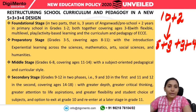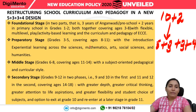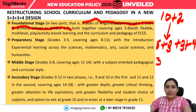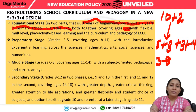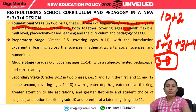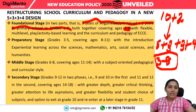The foundational stage covers 3 years of Anganwadi or preschool plus 2 years in primary school, up to the age of 8 years — so ages 3 to 8. This uses flexible, multi-level, play-based, activity-based learning and the curriculum and pedagogy of Early Childhood Care, combining Anganwadi with class 1 and class 2.